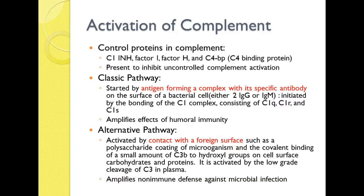The first pathway is the classical pathway, which is started by an antigen forming a complex with an antibody. If a foreign bacterial cell enters the body, it will combine with either two molecules of IgG or one IgM. This is initiated by the bonding of the C1 complex consisting of C1Q, C1R, and C1S. It amplifies the effects of humoral immunity. What you really need to know: the classical pathway starts by antigen-antibody complex.